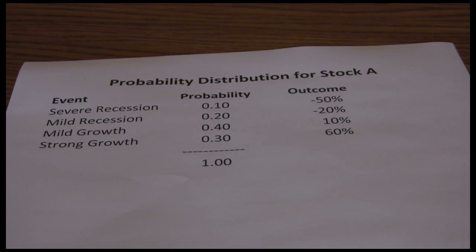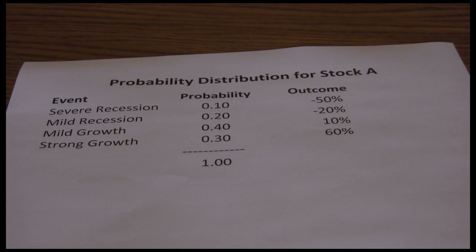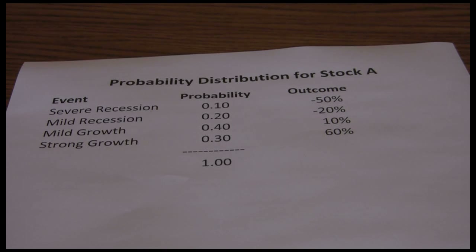The idea of a probability distribution is that we know there are a number of possible outcomes that could happen over a given time frame, which is typically one year. Nobody can foresee the future with 100% accuracy, so instead of saying this stock is going to give us a 10% or 20% return, we weigh all possible outcomes, think about how likely they are, what rate of return we'd get under each scenario, and figure out what we're likely to get on average and how much risk is involved.